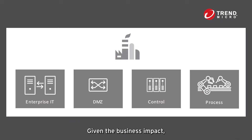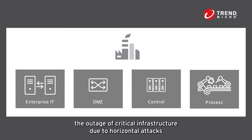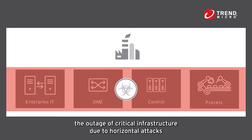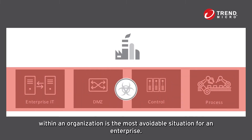Given the business impact, the outage of critical infrastructure due to horizontal attacks within an organization is the most avoidable situation for an enterprise.